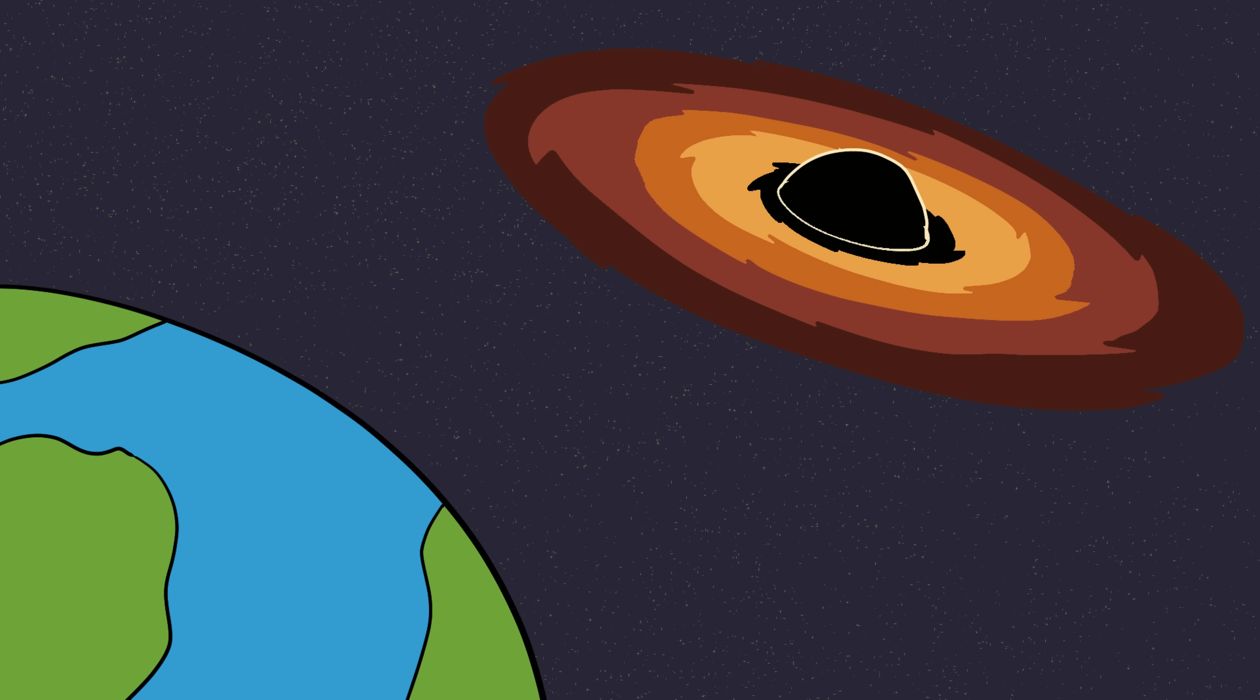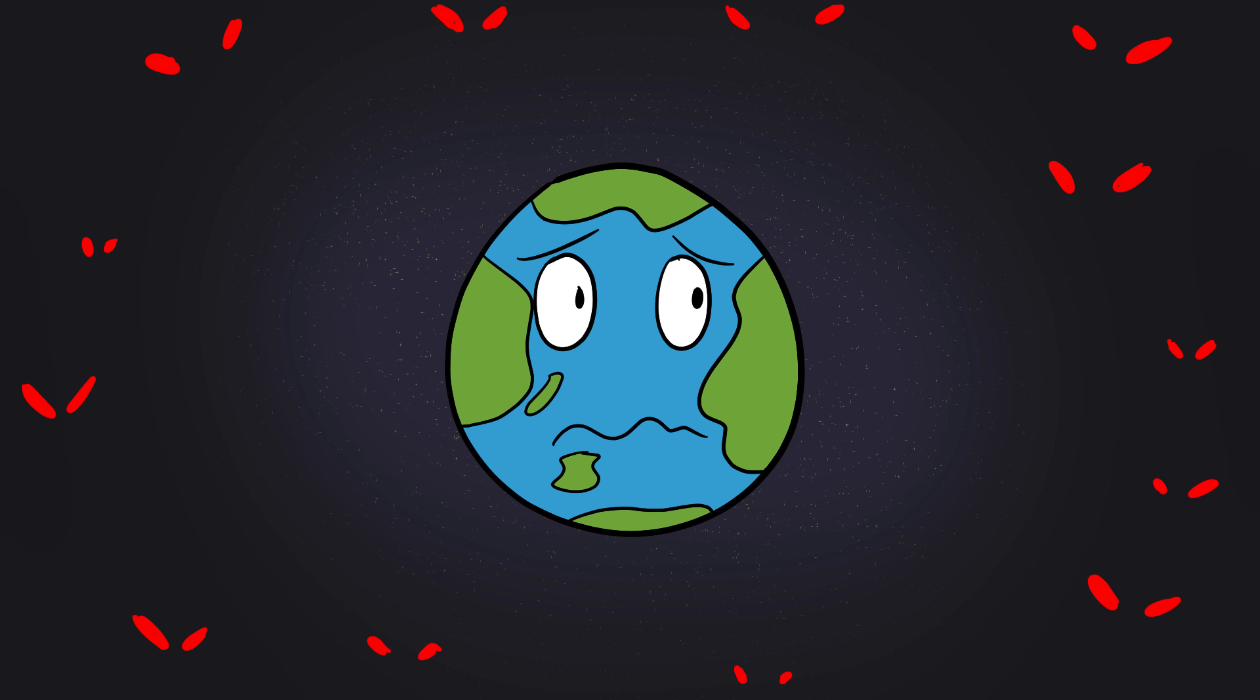And here's the kicker, we don't actually know how many are out there. There could be millions roaming unseen lurking in the dark. Right now, a rogue black hole could be headed straight for us, and we wouldn't notice until the sky bent like a funhouse mirror.